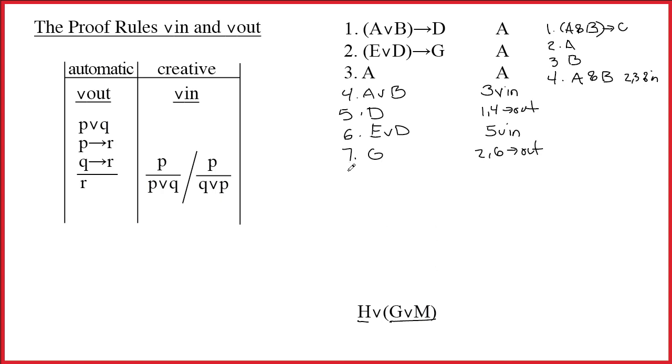So on line 8, I can build G wedge M. I just wedge in the M. 7 wedge in. And now that I've got G wedge M, I can wedge in the H and get 8 wedge in.